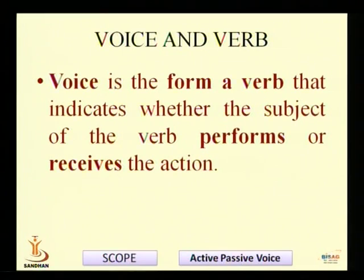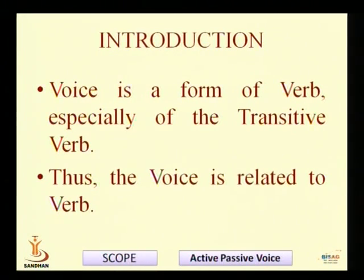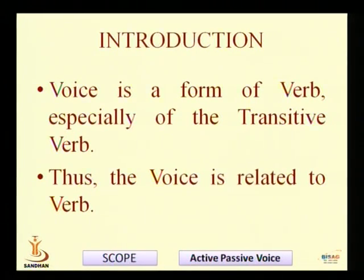Let's go into the detail of active and passive voice. Whether the subject of the sentence performs or receives the action — secondly, it is a form of a verb, especially the transitive verb. We have to know what the transitive verb is. A sentence is made up of two parts: subject and predicate. Predicate includes verb and object. When the verb passes on the action to some other object, it is called a transitive verb. For example, the sentence: 'I like chocolates.'